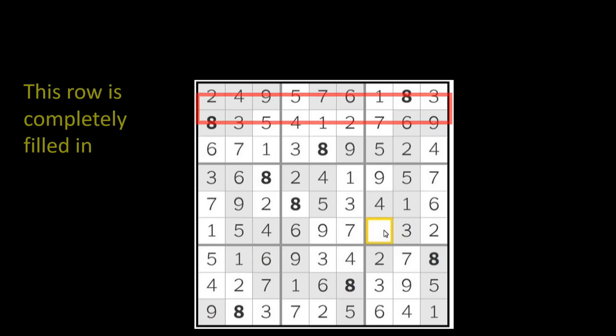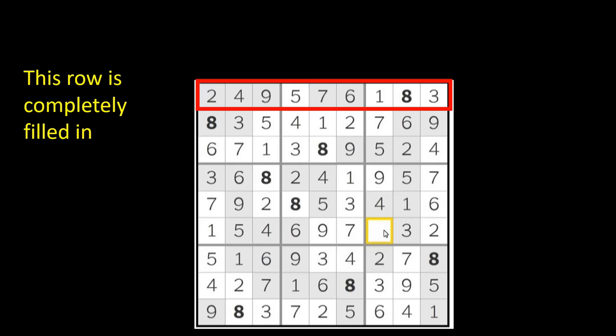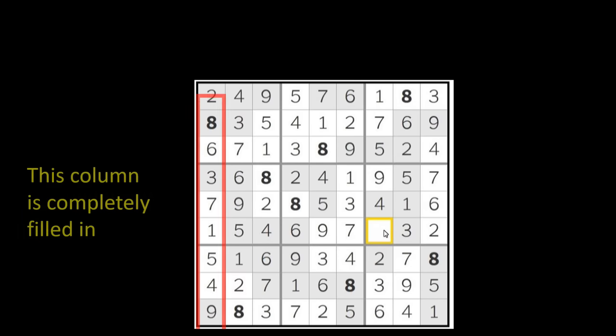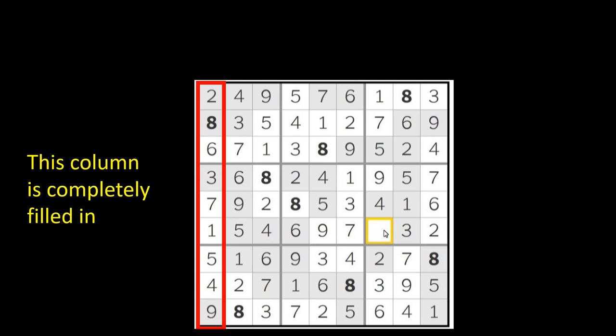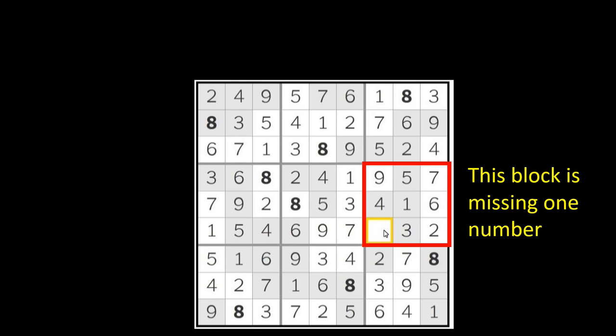Let's take a look at the first row. Here we see the numbers one through nine are all accounted for. You can see a one, a two, three, four, five, six, seven, eight, and nine. So this row is completely filled in. Now take a look at this column. You can see all the numbers one through nine are filled in in this column as well. Now let's take a look at this block. All the numbers except for one are filled in. The missing number will complete the puzzle. It is also missing a number going down this column and across this row.